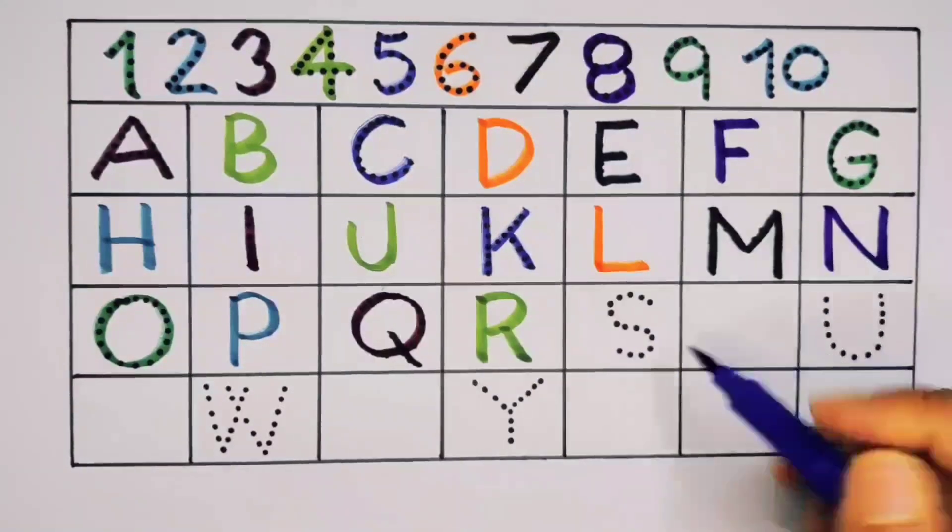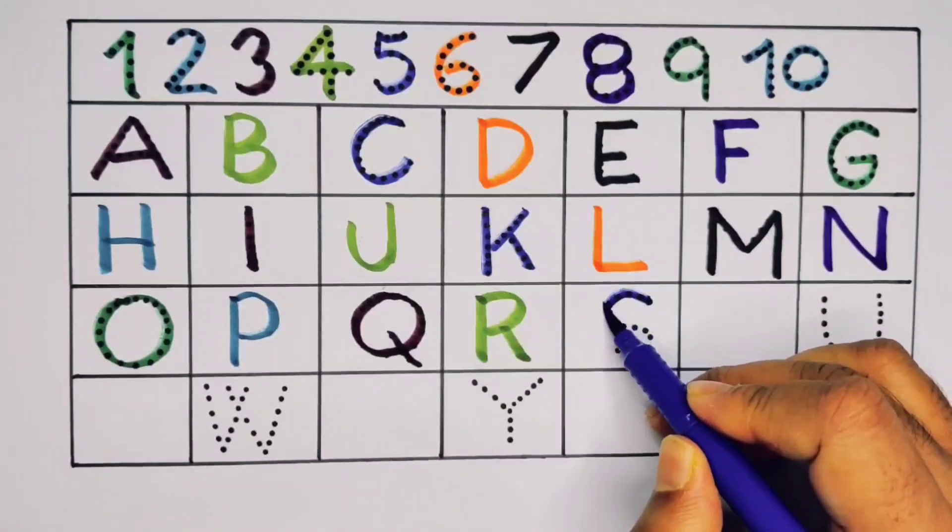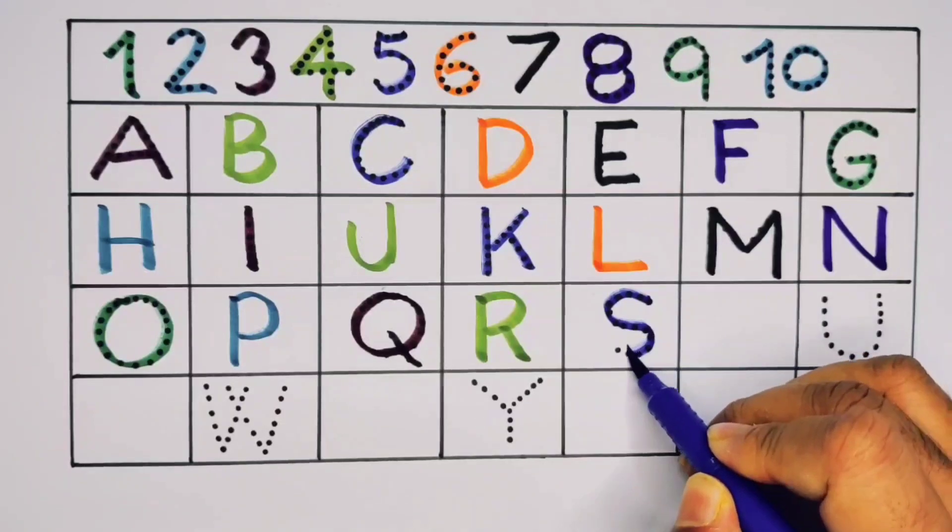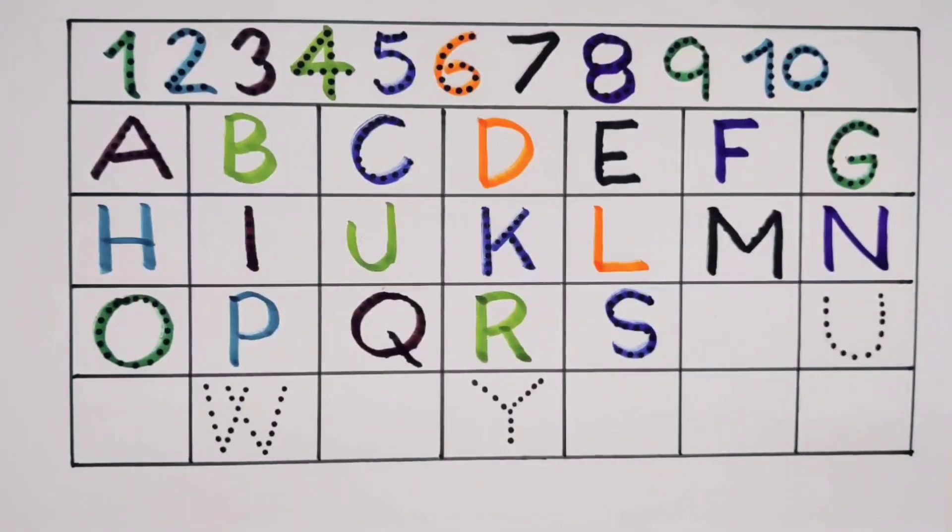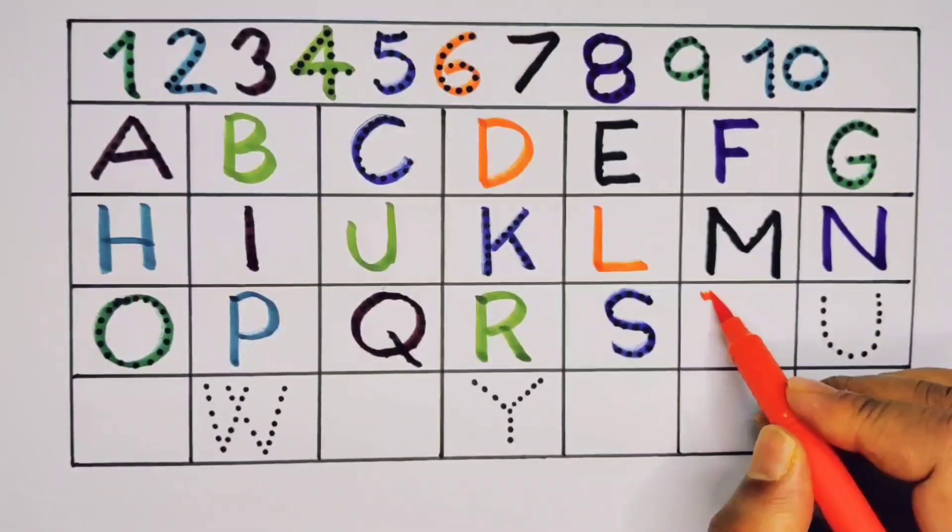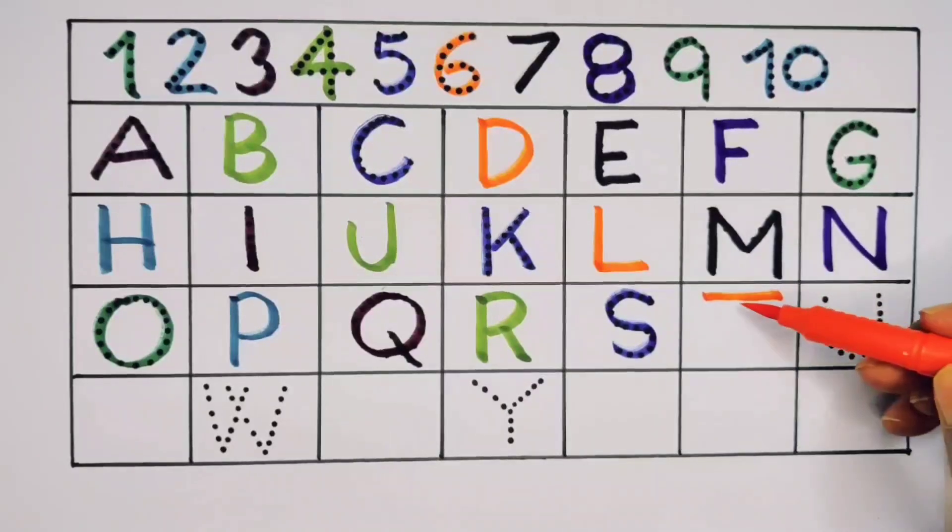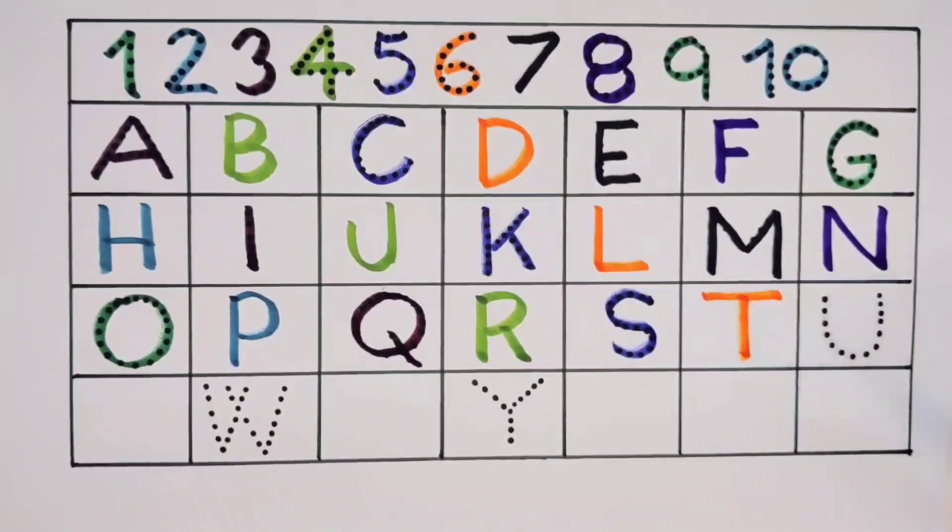Now S. S for sun. S for sun. What will next? It's T. T for tiger. T for tiger.